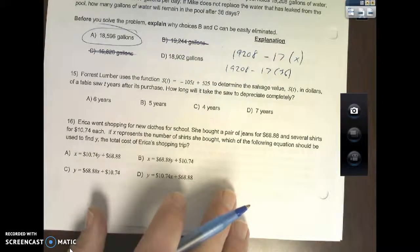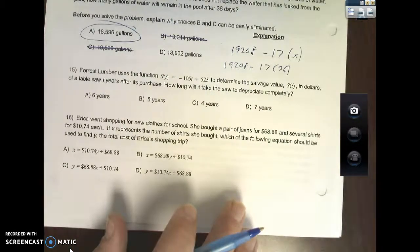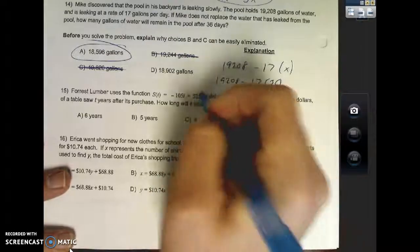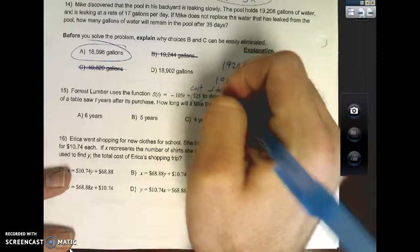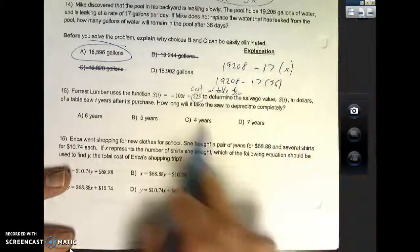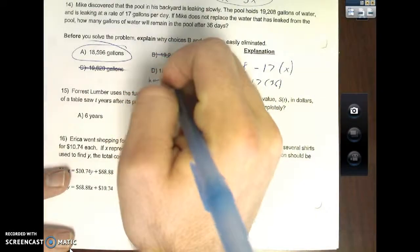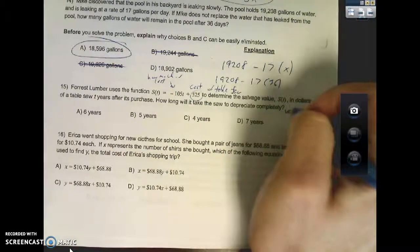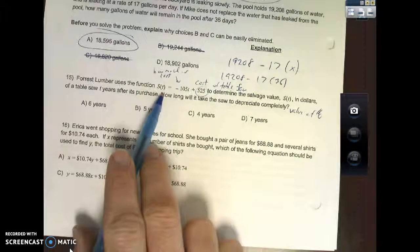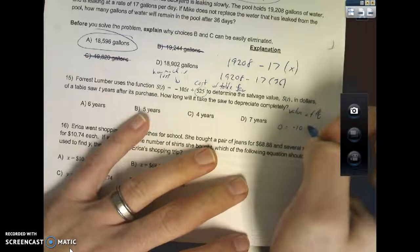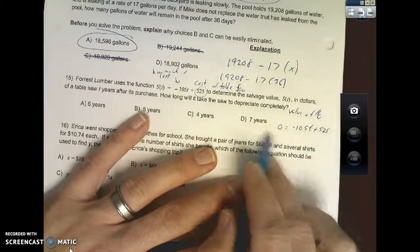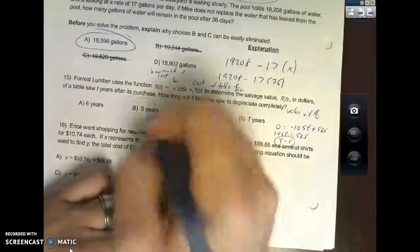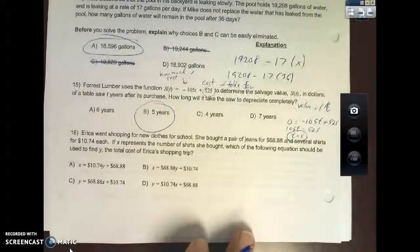Forest Lumber uses the function s(t) = -105t + 525 to determine the salvage value s(t) in dollars of a table saw t years after its purchase. How long will it take the saw to depreciate completely? A few things here: look at your original equation. This 525 represents the initial cost of the table saw, and this negative 105 represents how much is lost every year. To depreciate completely means it's worth zero dollars. All we're going to do is plug a zero in for s(t). I can add 105t over, I can divide both sides by 105. t equals five years.